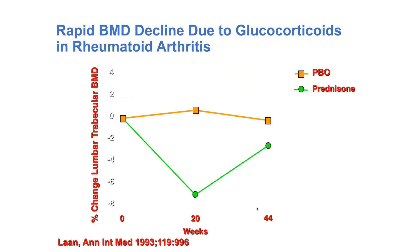Besides the bone turning soft, as shown many years ago by Lon and colleagues studying patients with rheumatoid arthritis, the bone loss from glucocorticoids is rapid. He put rheumatoid arthritis patients on 10 milligrams a day of prednisone, and within less than six months, they had lost 8% of their lumbar spine trabecular bone. When the prednisone was taken away, there is recovery of some bone loss, though not completely — and again, that is different than in the postmenopausal or age-related state.